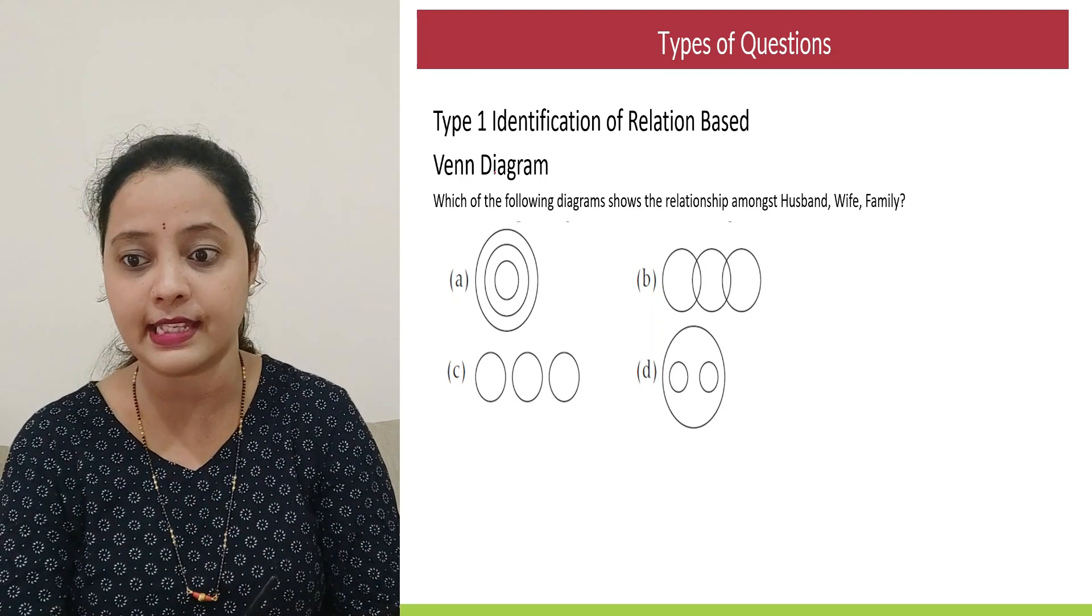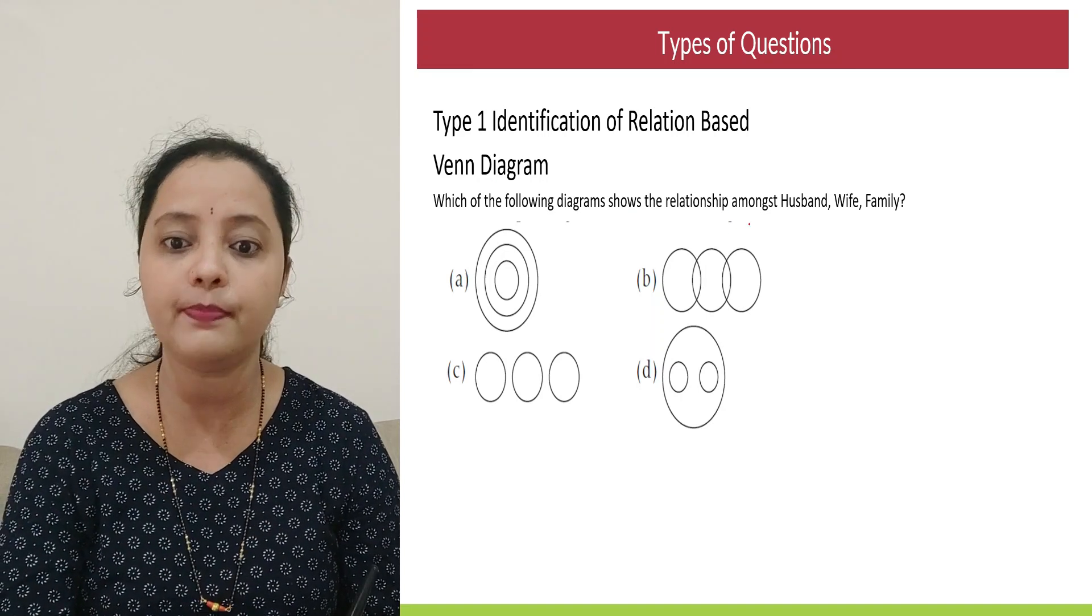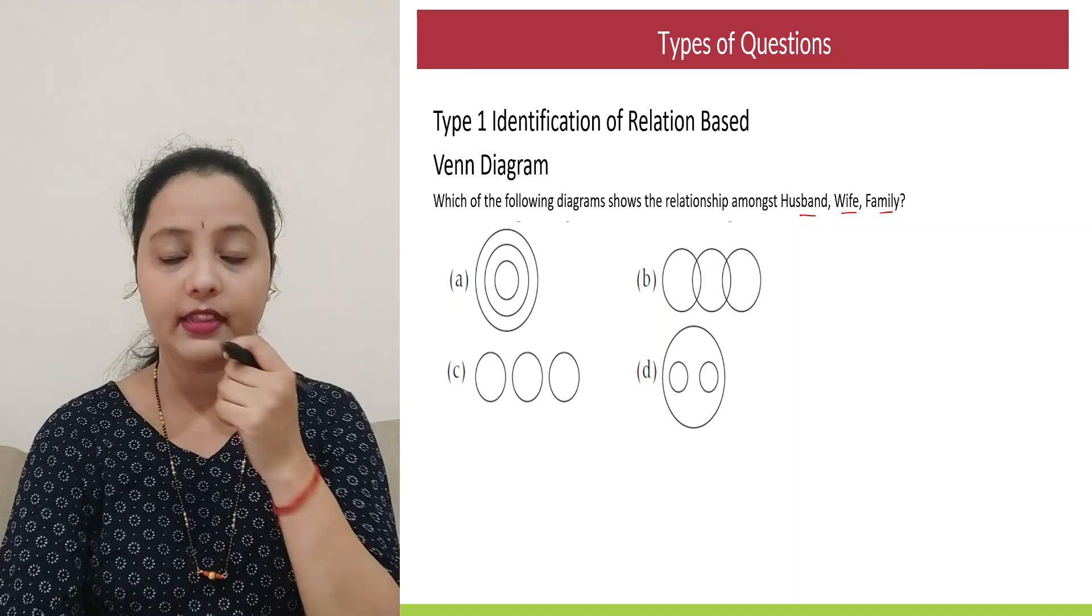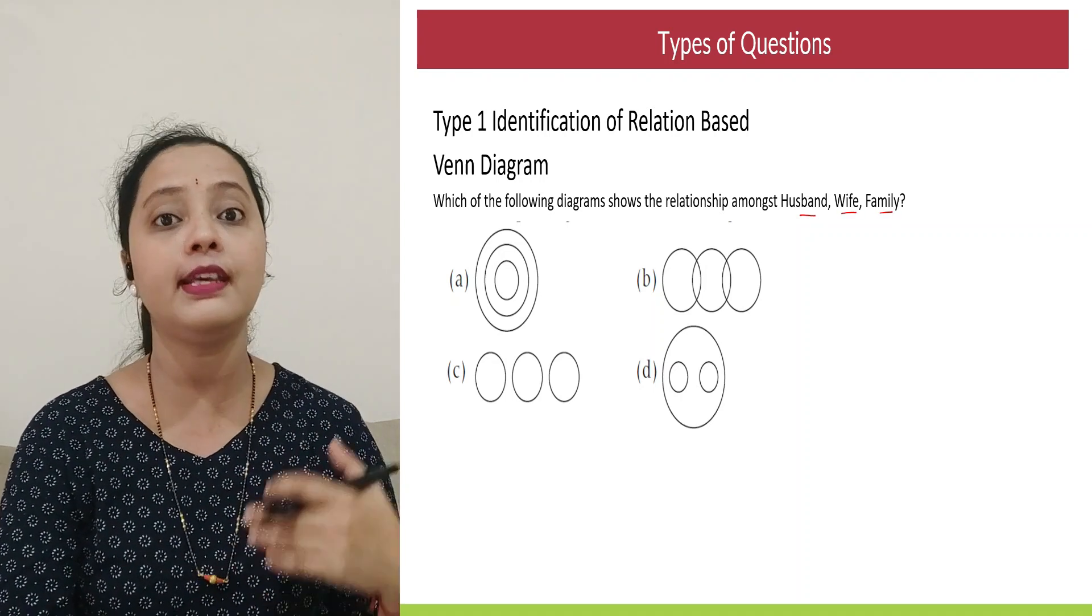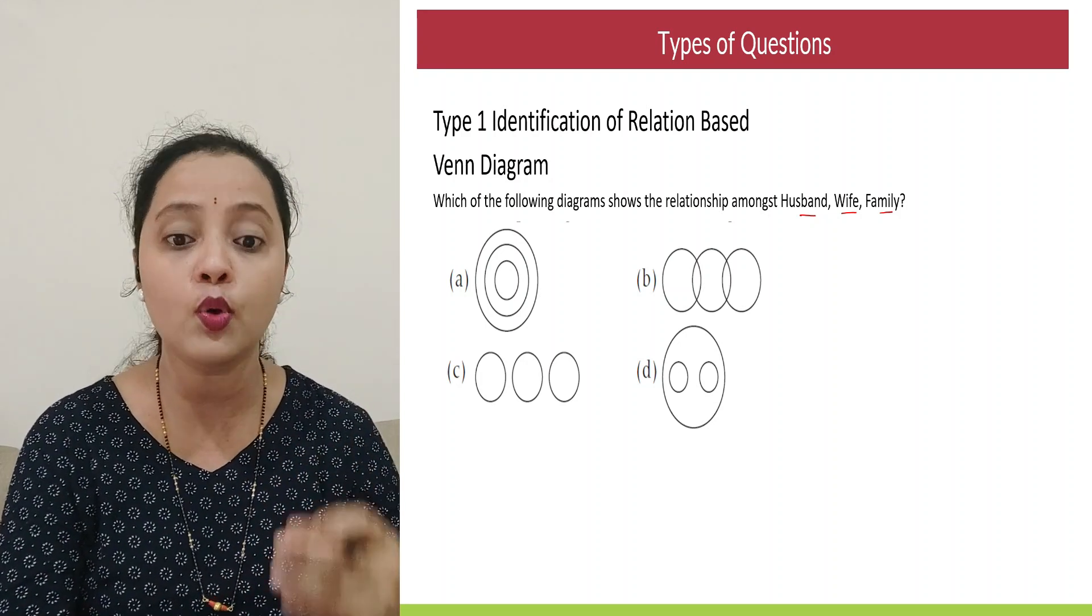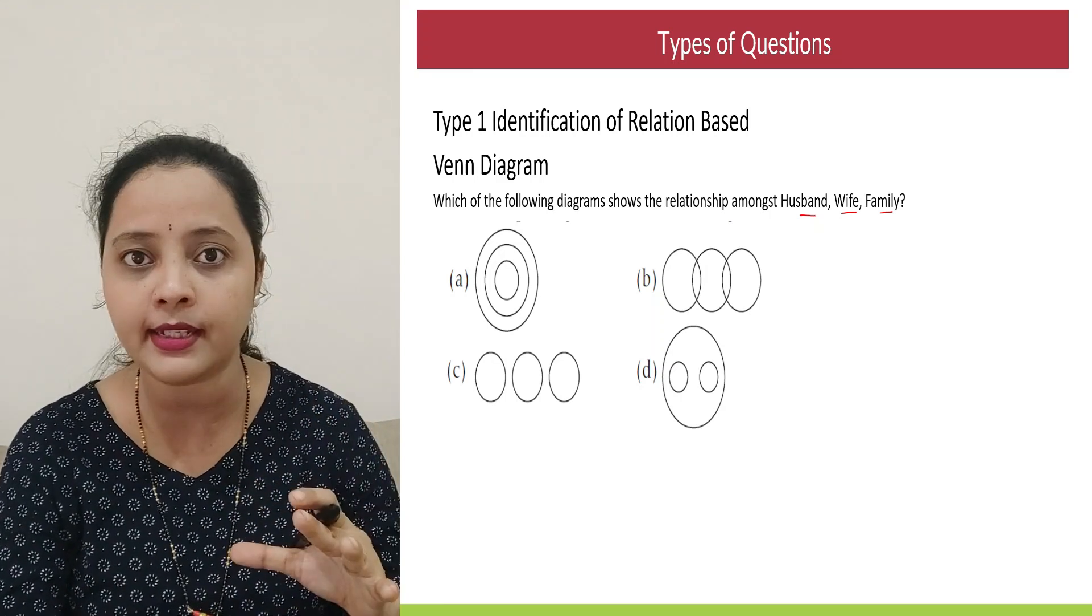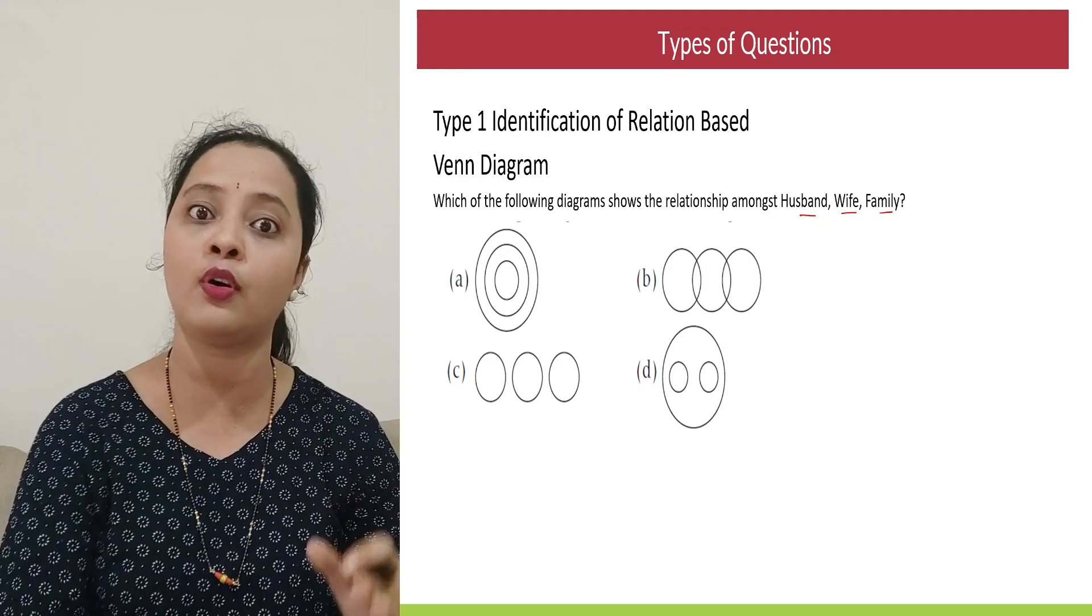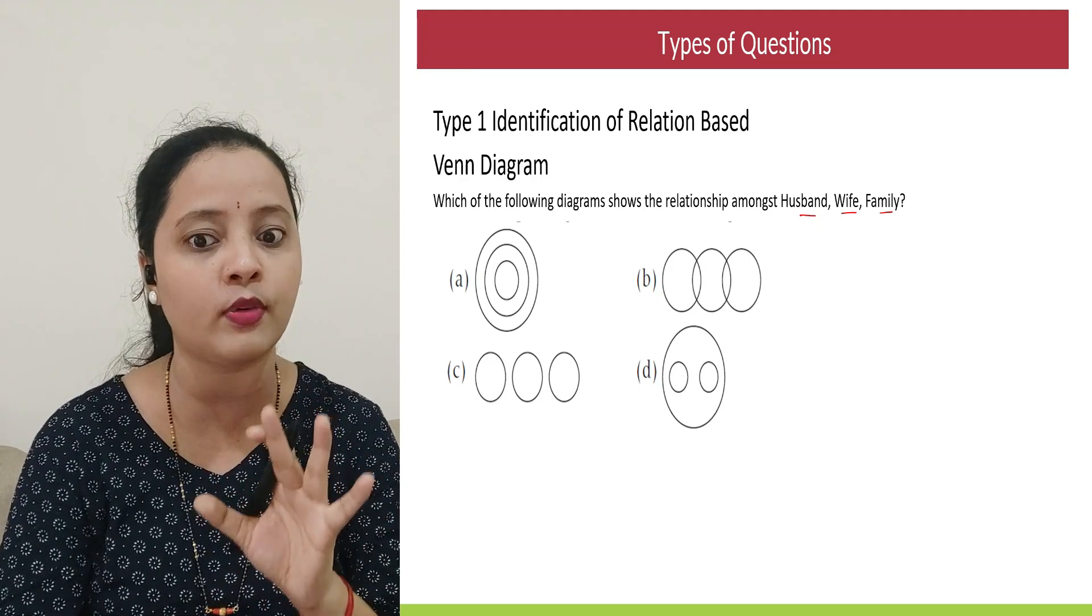So now let's get started. What is the question saying? Which of the following diagrams show the relationship between husband, wife and family? So what are the steps you follow? Generally, I suggest among the elements that are given, you try to figure out who would be the larger element or who can be the main element. And the others either would be sub elements of that main elements or entirely different component. So just check or look at the question in that way.